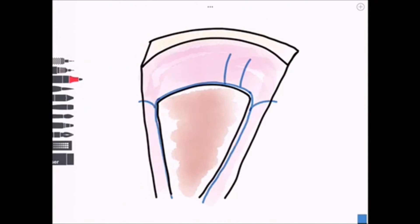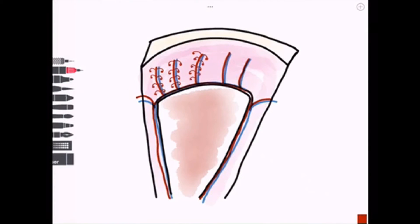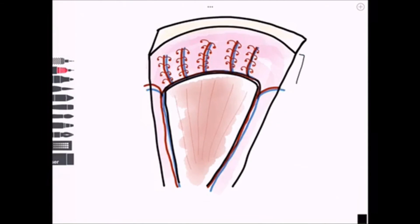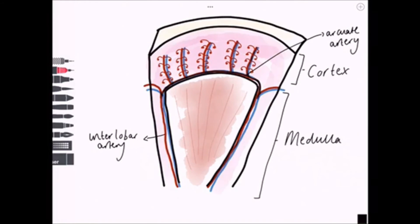Here is a zoomed-in version of a renal lobe. Here's the cortex and the medulla. And here's the interlobar artery, the arcuate artery, and the interlobular arteries.